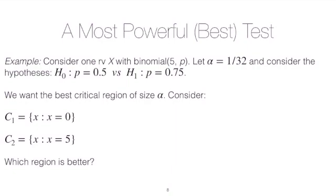is 1 over 32. And suppose we're testing a simple hypothesis versus a simple hypothesis. So the null is that P, the probability of success, is one half, and the alternative is that it's 0.75.